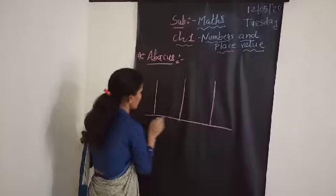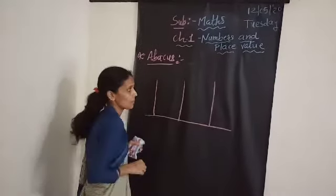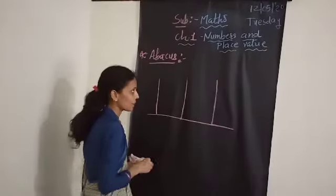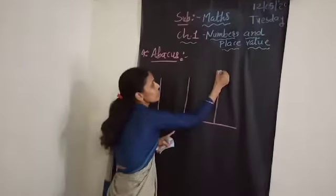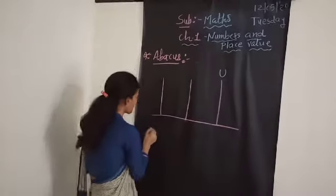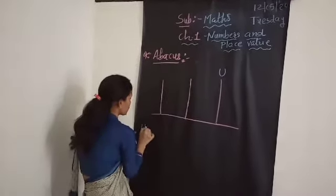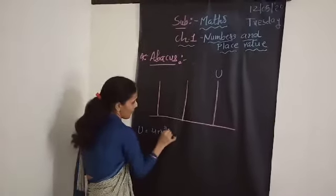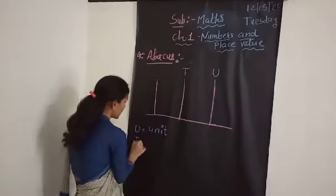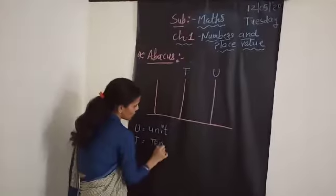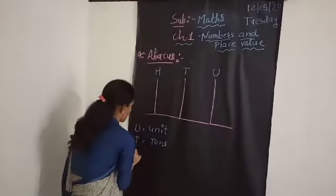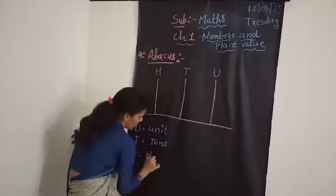For that, we first draw the Abacus. Here I draw one Abacus — it's a rough diagram. Here we write U, that is U stands for Units. Here we write T, which stands for Tens. And here we write H, which stands for Hundreds.